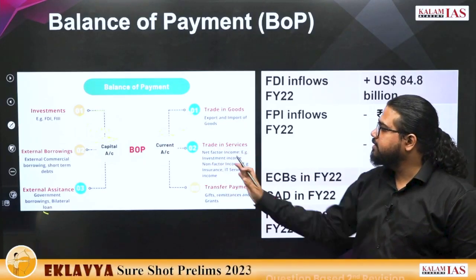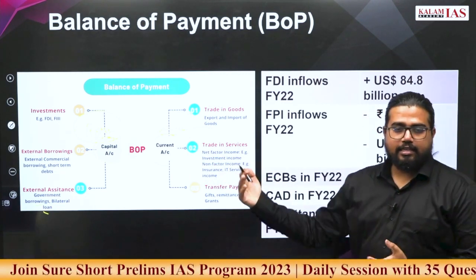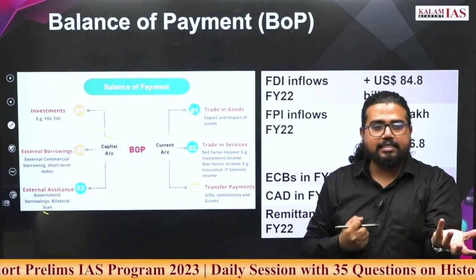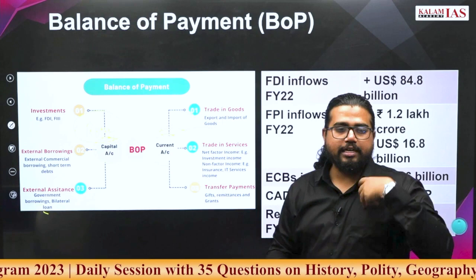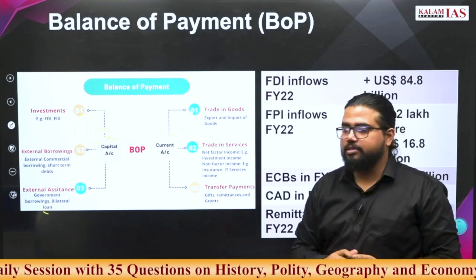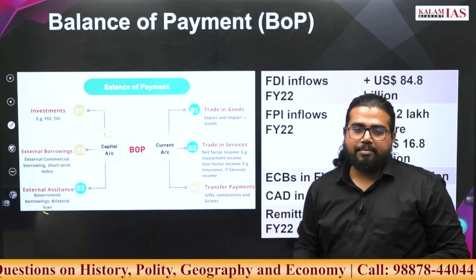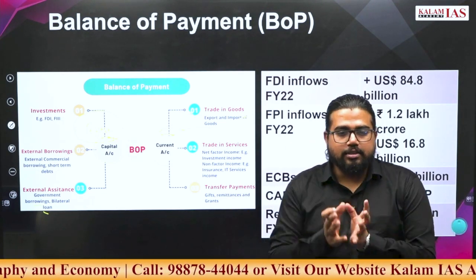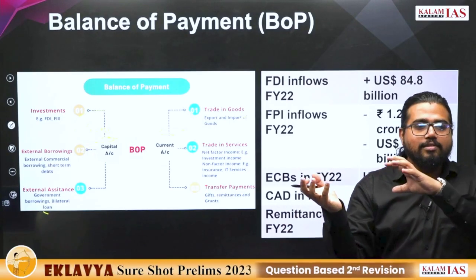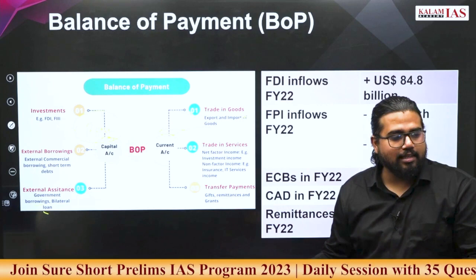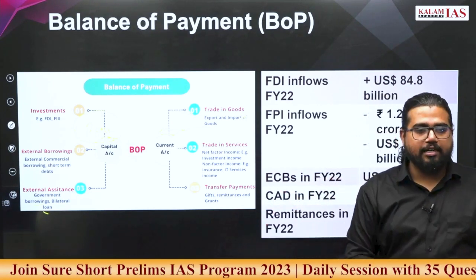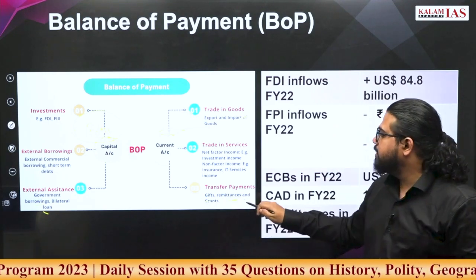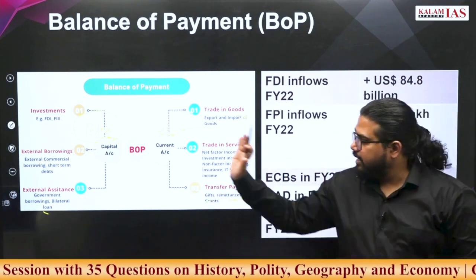If no repayment has to be done, those transactions come into the current account. For example, trade transactions: if gold is given and money is taken, that transaction is finished — no need to return money later. Remittances are similar: non-resident Indians sending money home for household expenditure do not expect it to be returned. So remittances, gifts, and grants all go under the current account.